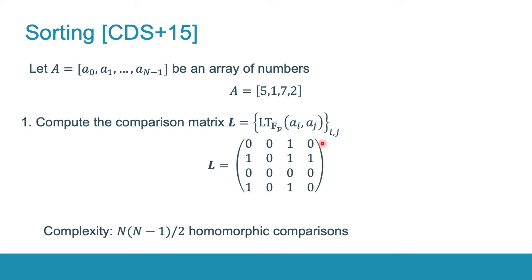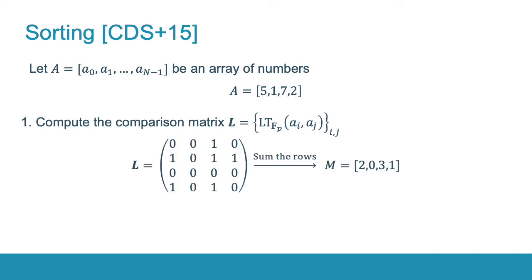So you can see that, for example, this term is zero and its symmetric term with relation to the main diagonal is equal to one. As a result, we need only n(n-1)/2 homomorphic comparisons in order to compute this matrix. And these comparisons can be performed in parallel. Then we sum the rows of this matrix and obtain an array M. This array contains the positions of the elements of the input array A in its sorted version.